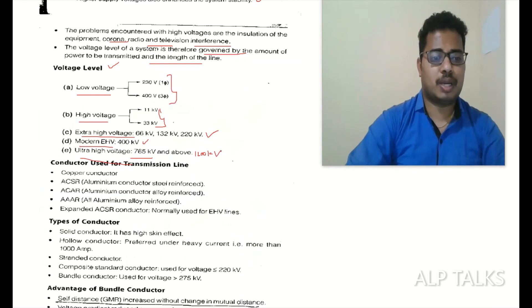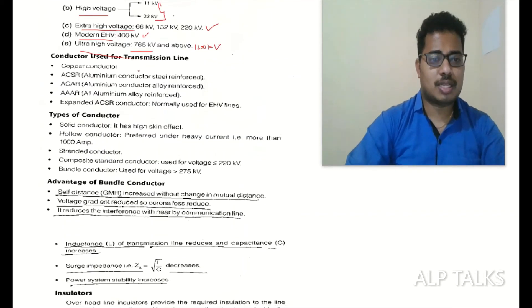These voltages are maintained by generally four grades: conductors used for transmission lines. Copper conductors and aluminum - aluminum we won't use because they have very less strength. So aluminum conductors steel reinforced ACSR, ACAR aluminum conductor alloy reinforced, all aluminum alloy reinforced. Expanded ACSR conductors normally used for EHV lines. These abbreviations are very important when you are applying for any PGCET or something like that.